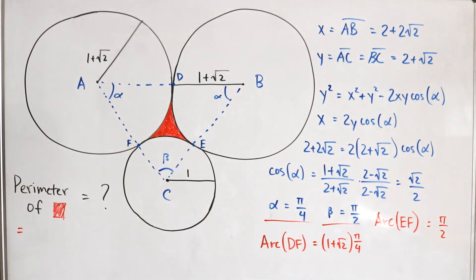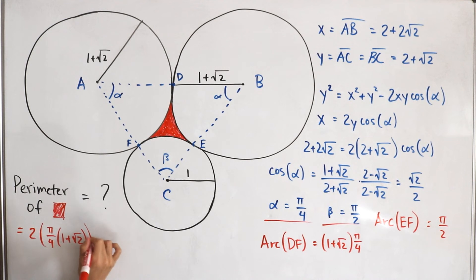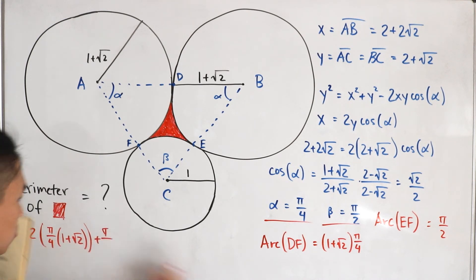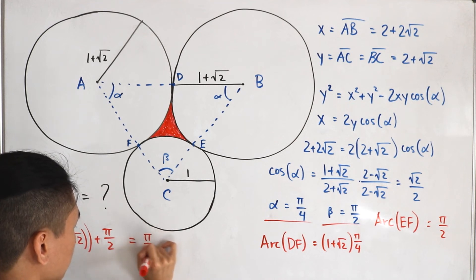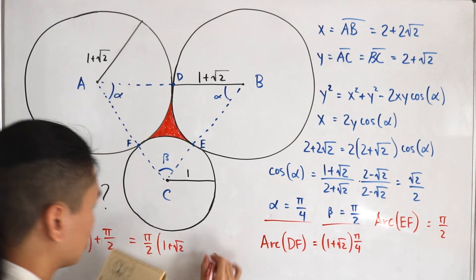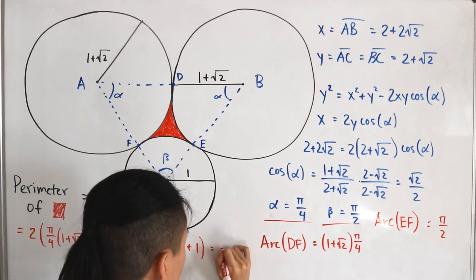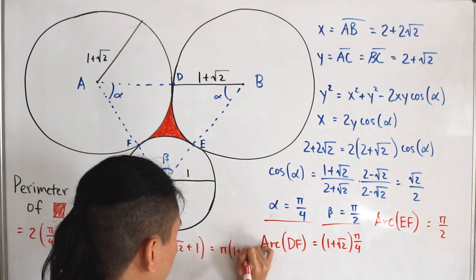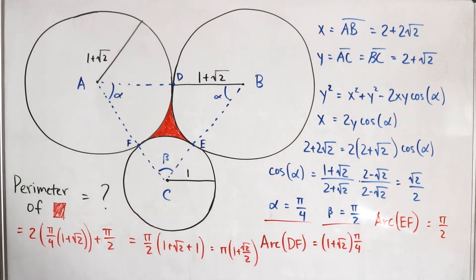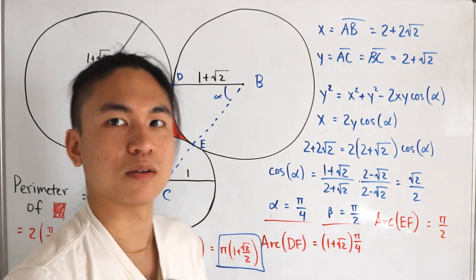The perimeter is twice the arc DF amount plus arc EF: 2·(π/4)·(one plus √2) plus π/2. That simplifies to (π/2)·(one plus √2) plus π/2. Factoring out π/2 gives us π/2·(one plus √2 plus one), which simplifies to pi times (one plus √2) divided by two. That's the perimeter of the shaded area — pretty cool!